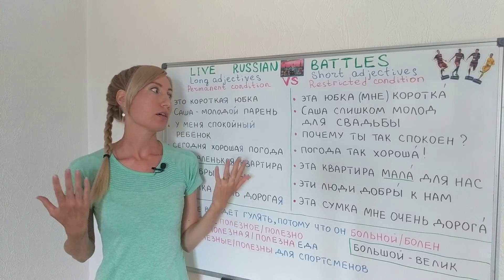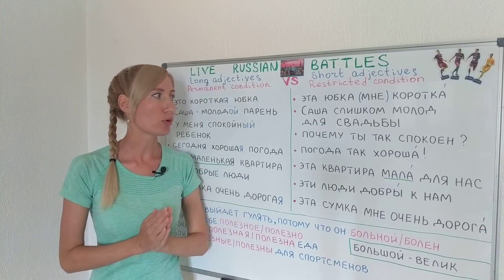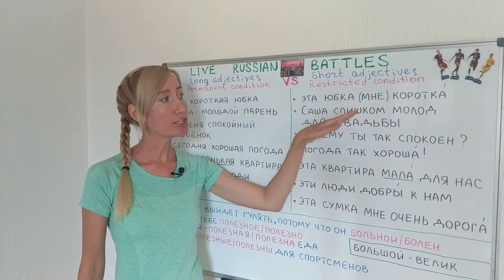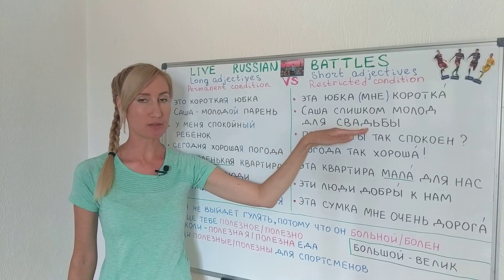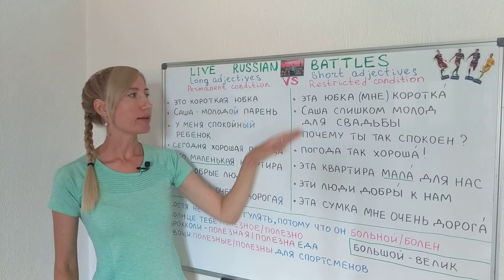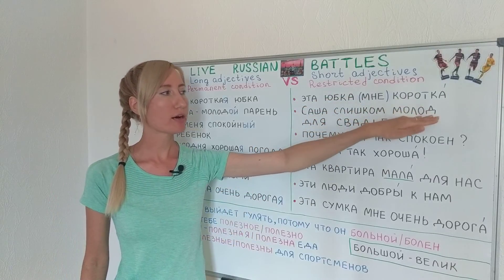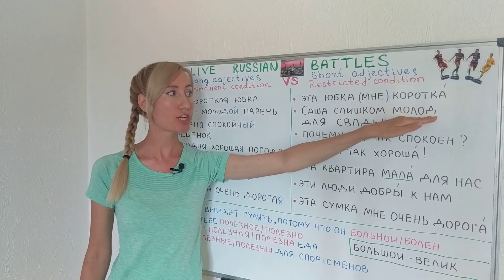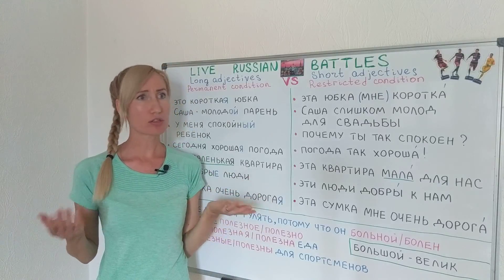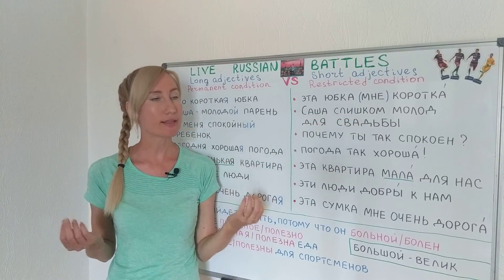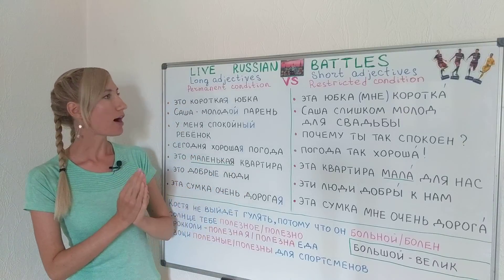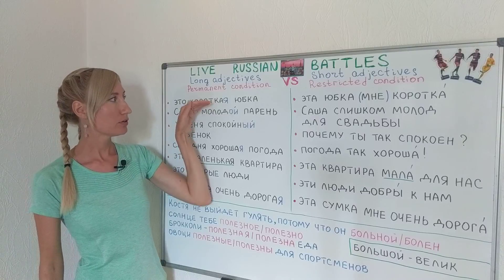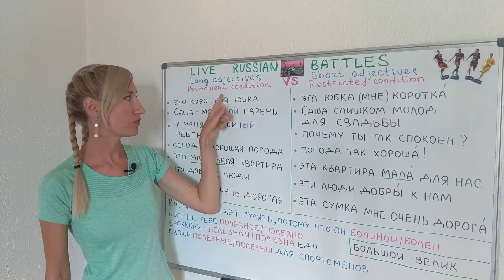Let's continue. Саша молодой парень — Sasha is a young man. Again, it's a general statement — this guy is young, not old. Compare with Саша слишком молод для свадьбы — Sasha is too young for the wedding. That is a restricted condition: for the wedding. Maybe in general he is not so young, but for a wedding he is young.